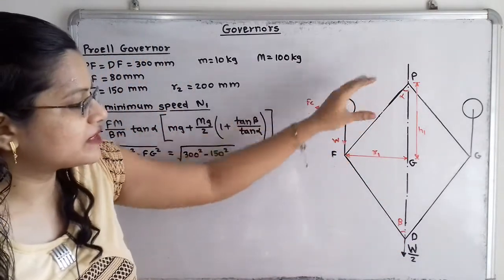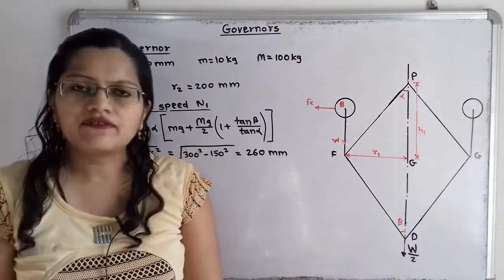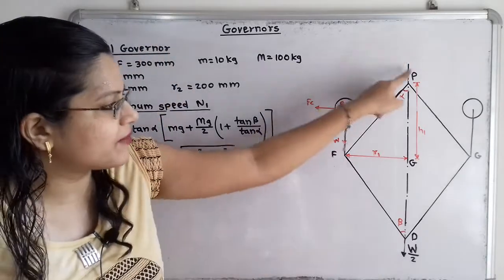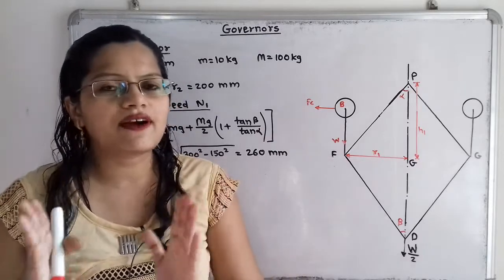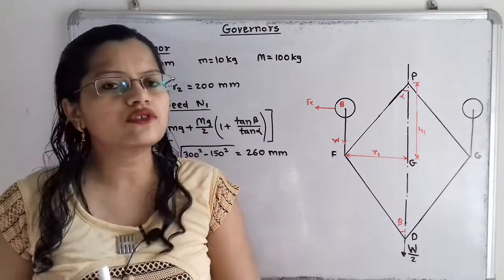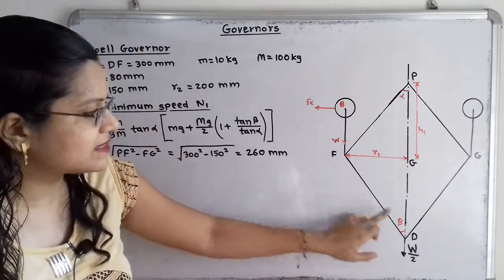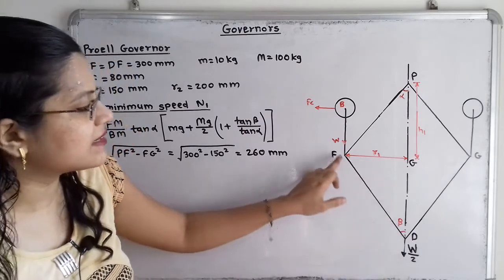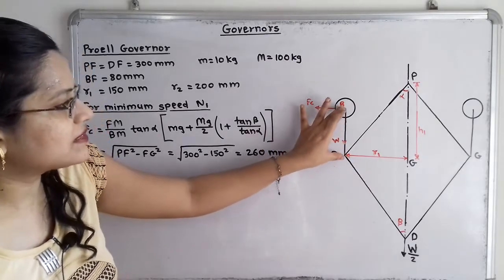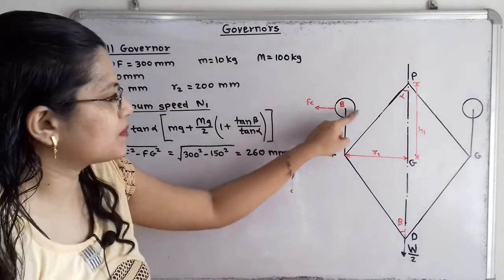Both points P and D lie on the same vertical spindle axis. The length of the arm equals the length of the link, both 300 mm. Since the arm and link are equal and both end points lie on the same vertical line, tan α equals tan β. This is the Proell Governor, so we extend the lower link FD. The arm BF has length 80 mm and B is the centre of the fly ball.